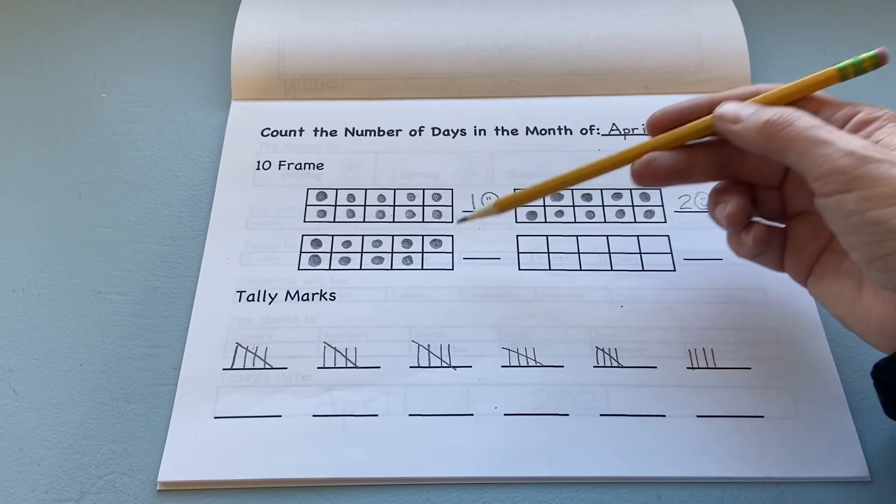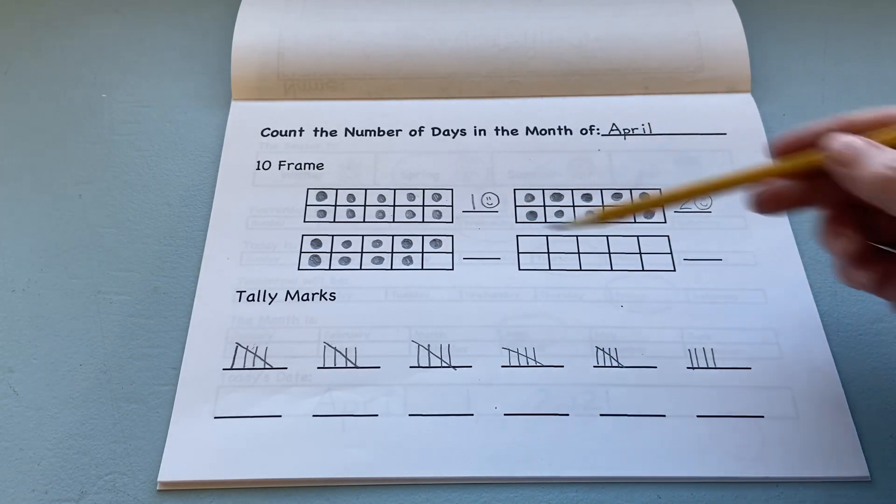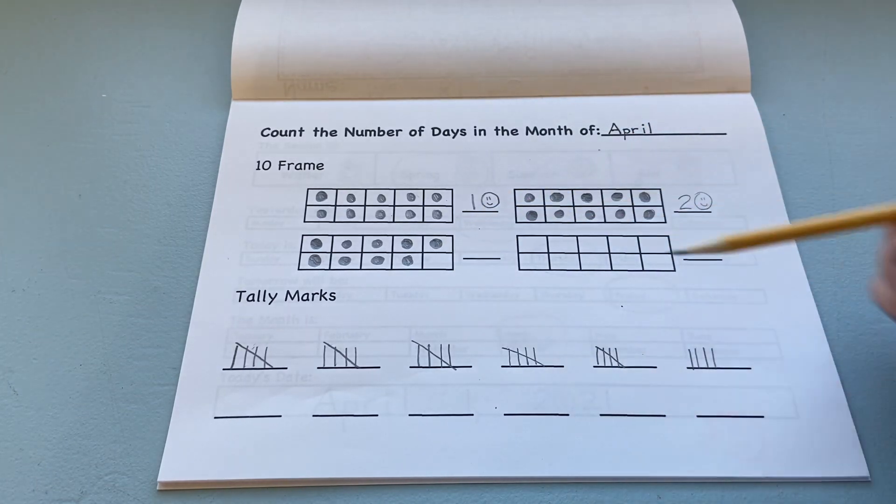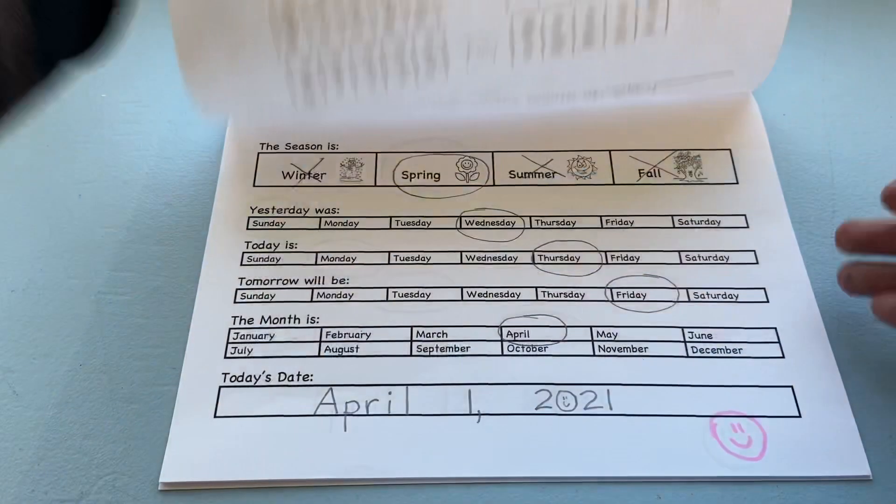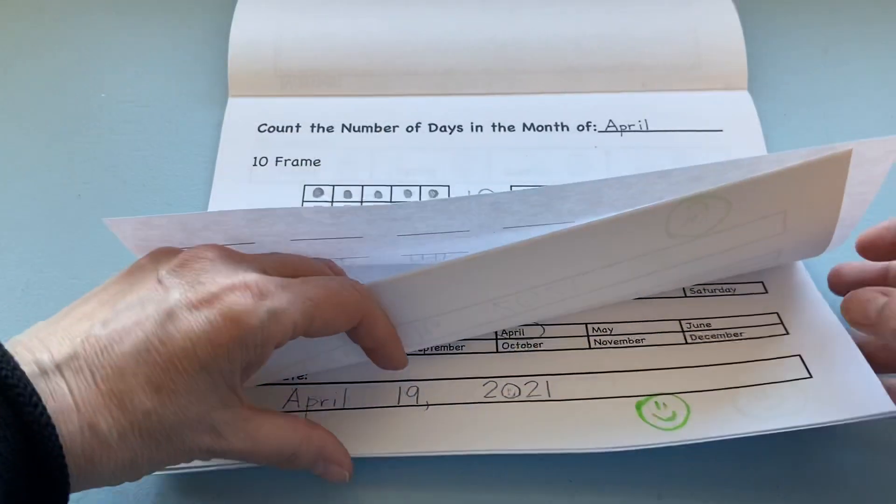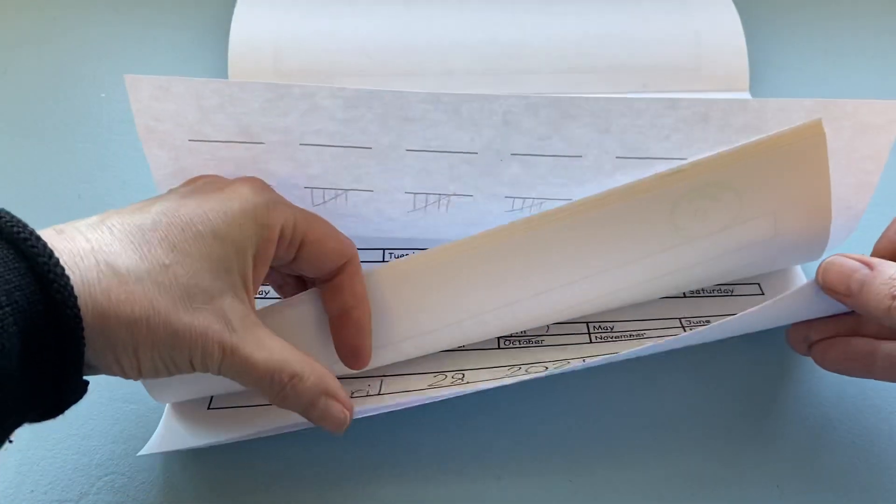So 29 is one short of 30. You can see that tomorrow will be 30, and we can do another dot here and do a slide, but not today because we're on the 29th. So today is April 29th, let's go to our next page in our booklet.